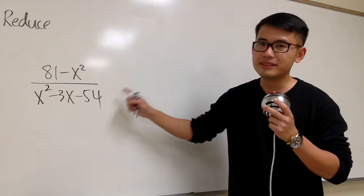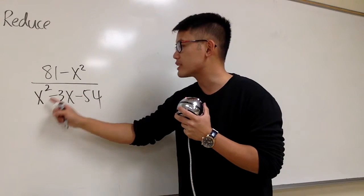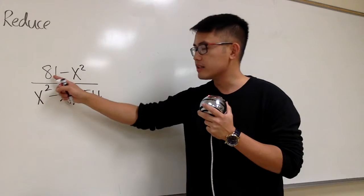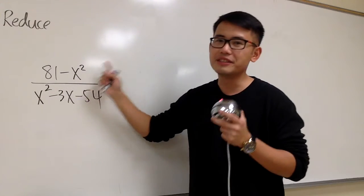In this question, we are going to reduce this rational expression. We have 81 minus x squared over x squared minus 3x minus 84. As we can see, on the top right here, this is not so good because this is out of order,